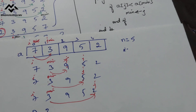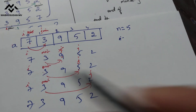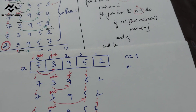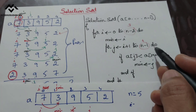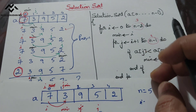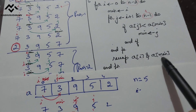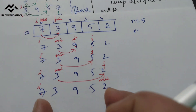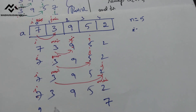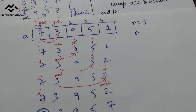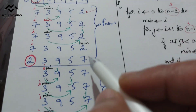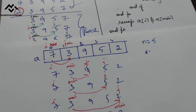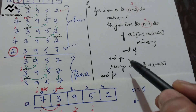Array is 7 3 9 5 2. This is my i, and now 2 is the new min. j is assigned as min. j becomes 5; 5 is less than or equal to 4 is false, so we exit the for loop. Swap a[i] and a[min]: a[i]=7 swaps with a[min]=2. Now 2 is here and 7 is there. Pass 1 is complete — we found one minimum element.